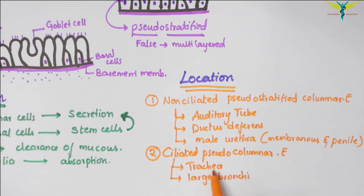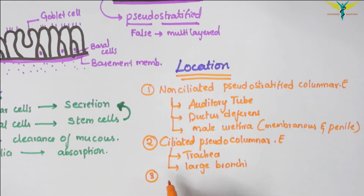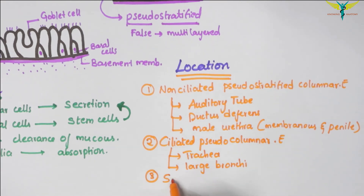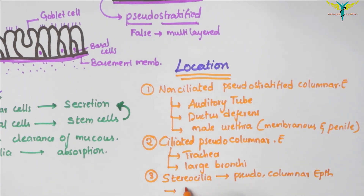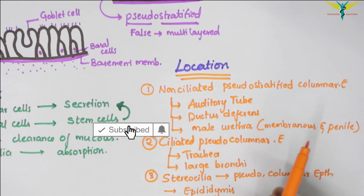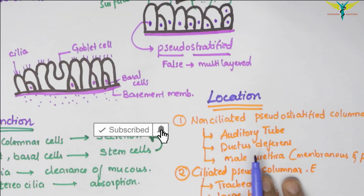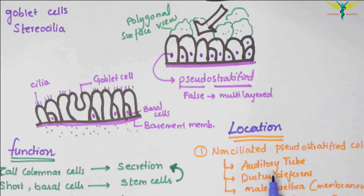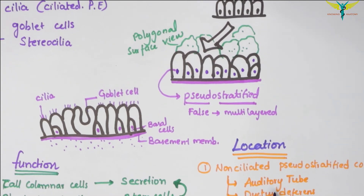For a video on the histology of the trachea, you can click on the eye button. The pseudo-stratified columnar epithelium with stereocilia is seen in the epididymis. For a video on the histology of the epididymis, you can click on the eye button. So this is all about the pseudo-stratified epithelium.